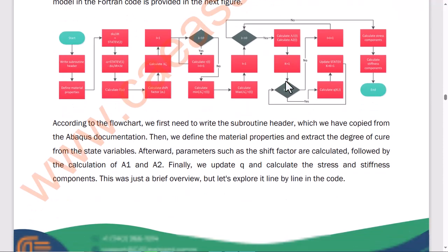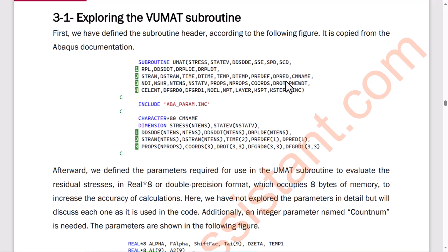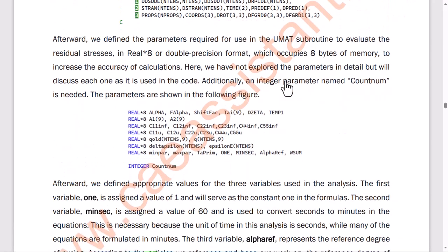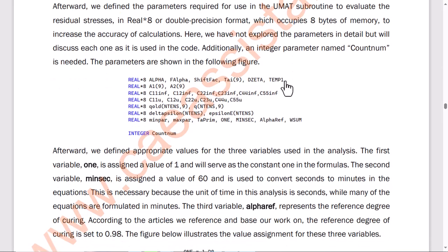First, we define the subroutine header, as shown in the figure, which was copied from the Abaqus documentation. Next, we define the parameters required for use in the UMAT subroutine to evaluate residual stresses, using real*8 or double precision format. This format occupies 8 bytes of memory to enhance the accuracy of calculations. While we haven't delved into the parameters in detail here, each will be discussed as it is used in the code. Additionally, an integer parameter named countNum is required. The parameters are illustrated in the figure.